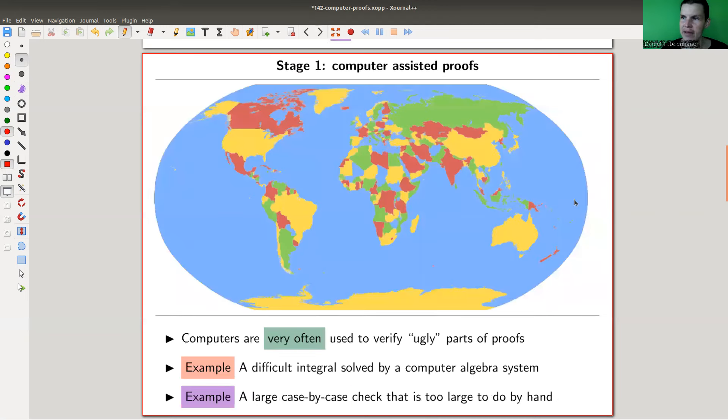So stage one is computer-assisted proofs. The usage of computers in proofs, what I said before, it's like a stage zero: use computers to do calculations. You don't want to multiply a 100 times 100 matrix. It's better to let the computer do it. It makes less mistakes. In particular, if you're me, don't try to multiply two by two matrices. I will ask a machine to do it. I could barely multiply one by one matrices. So that's kind of stage zero that I'm kind of ignoring a little bit.